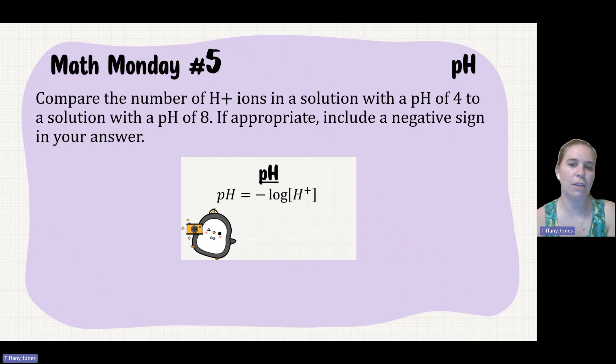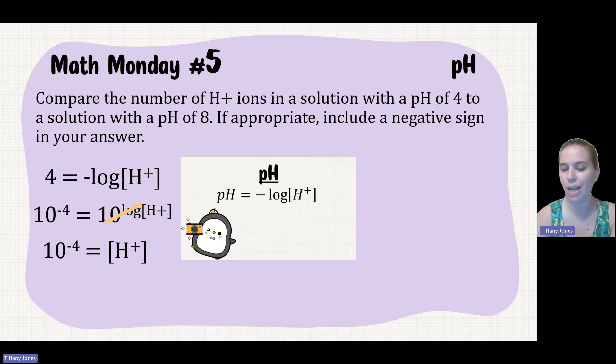Compare the number of H+ ions in a solution with a pH of 4 to a solution with a pH of 8. For pH 4, we'll say 4 = -log[H+]. To get rid of that logarithm, we take 10 to the power on both sides, which gives us 10^-4 = [H+].